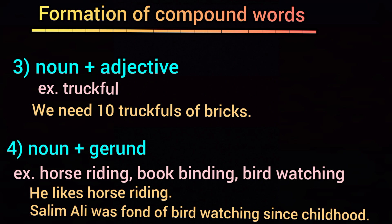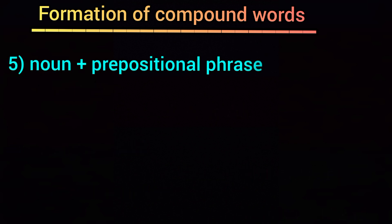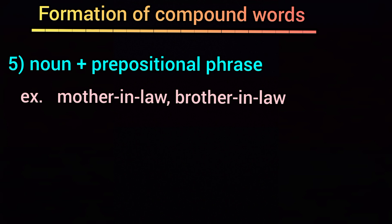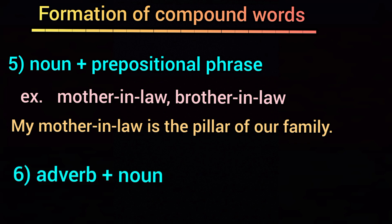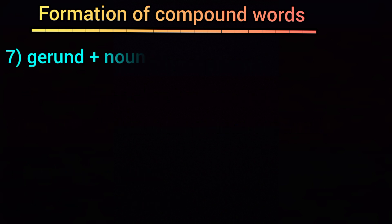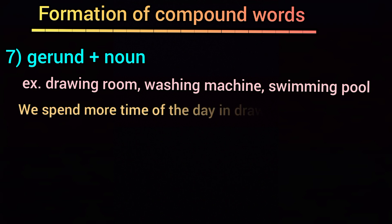Fifth is noun plus prepositional phrase — for example, mother-in-law, brother-in-law. 'My mother-in-law is the pillar of our family.' Here in-law is the prepositional phrase, and this is a hyphenated compound word. Sixth is adverb plus noun — for example, over-enthusiasm, where over is an adverb and enthusiasm is a noun. Seventh is gerund plus noun — for example, drawing room, washing machine, swimming pool. 'We'll spend more time of the day in the drawing room.'